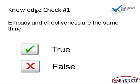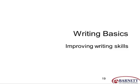Now you get to use your green checks and red Xs — this is your first knowledge check. Efficacy and effectiveness are the same thing. Click the green check if you think it's true, and click the red X for false. Excellent — that is false. Good job.